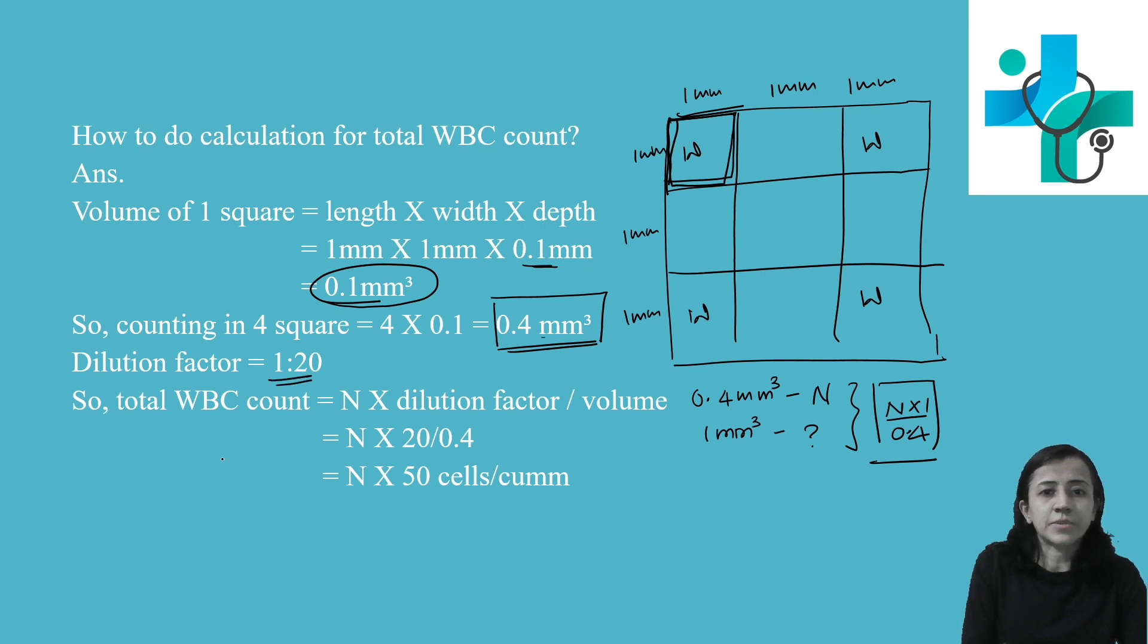Now we come to dilution factor. Dilution is 1 to 20. So in 1 to 20 dilution, our count is N times 1 divided by 0.4. In 1 to 1 dilution, because blood is not diluted, the count would be N times 1 divided by 0.4, divided by 1/20, which equals N divided by 0.4 multiplied by 20.